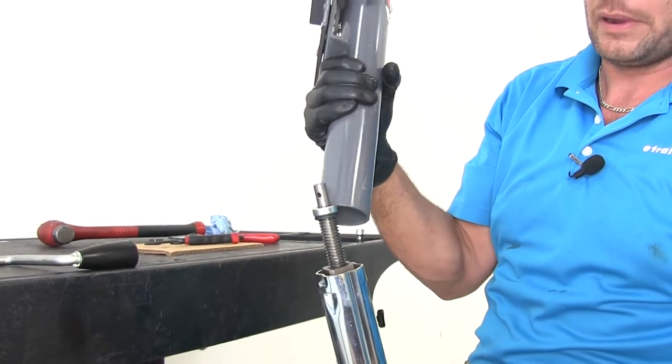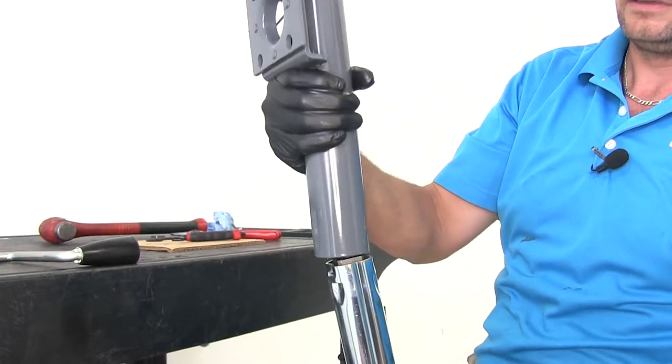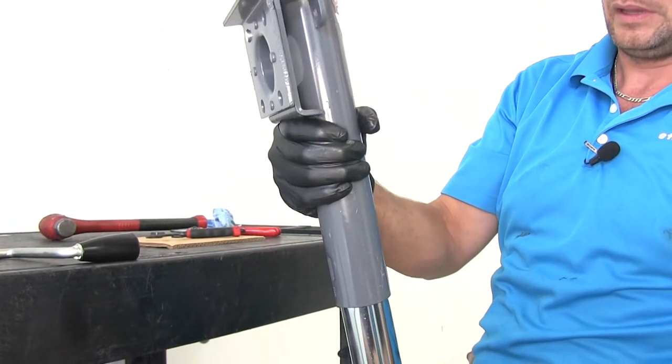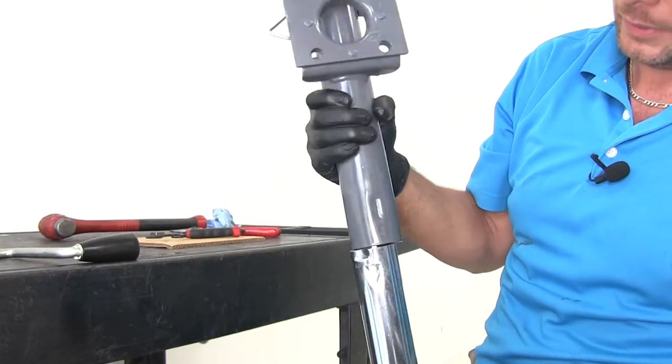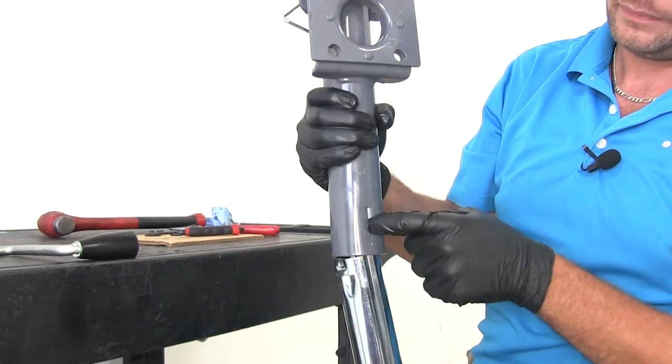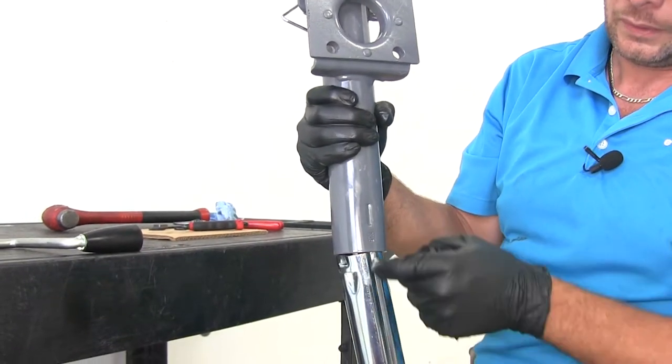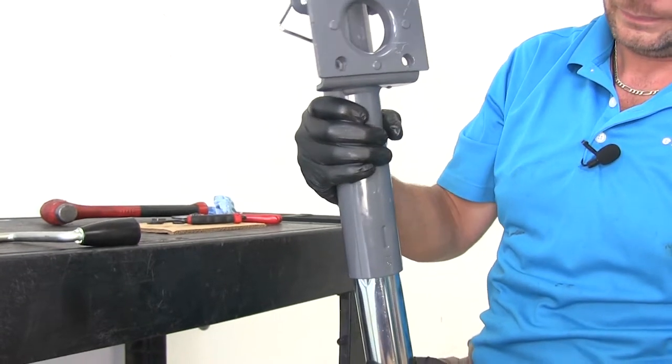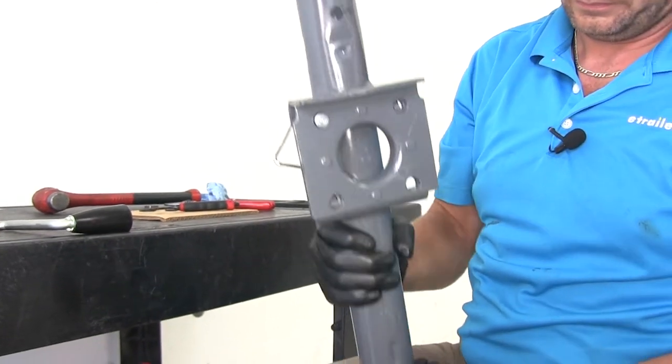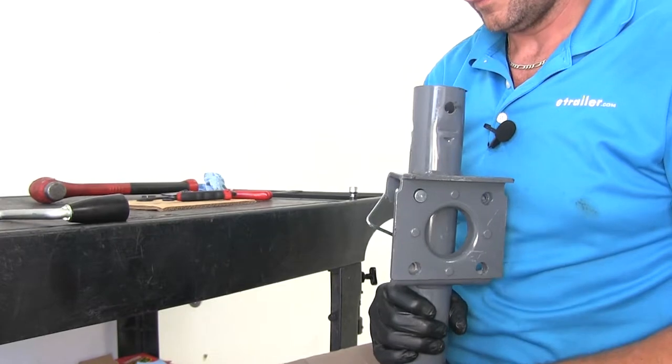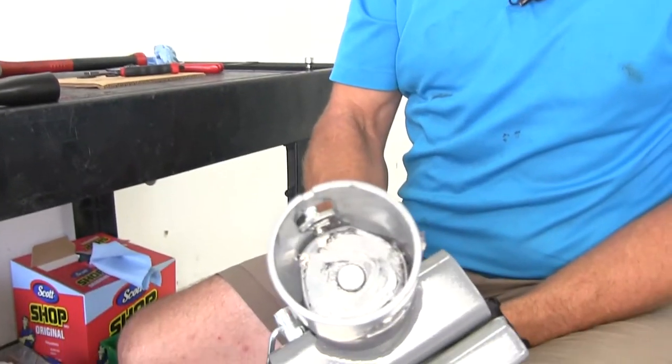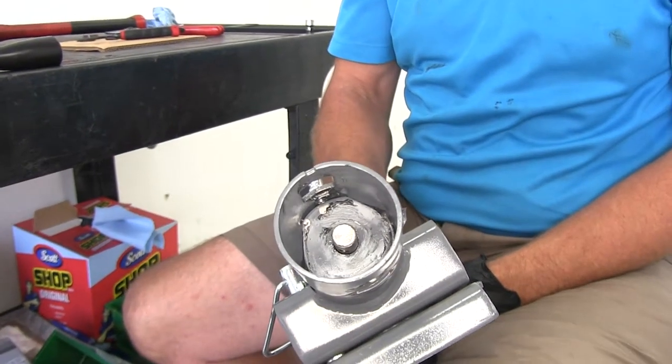We'll have our new bearing in place and the support washer that comes with it. Now we can bring our jack outer tube down on the inner tube here. We're going to align that elongated dimple with the grooves. We can bring that all the way down and then our screw is going to come right back through the hole that's in the top of it.